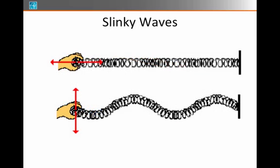You can visualize this very nicely if you think about a slinky. Slinkies can be used to make both transverse and longitudinal waves. If I fix one end of a slinky to the wall and hold the other end with my hand and stretch it out, I can jiggle my hand back and forth and get a ripple that goes down the length of the slinky — areas of compression and areas of being stretched out. Or I can jiggle my hand up and down and get a transverse wave where the disturbance goes up and down along the slinky.